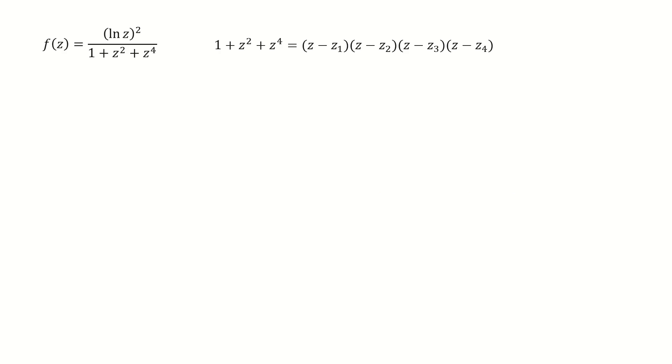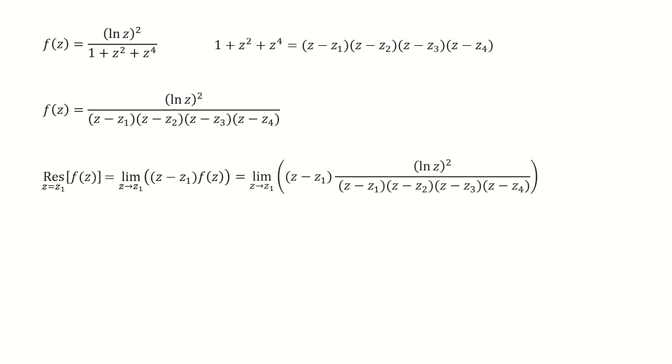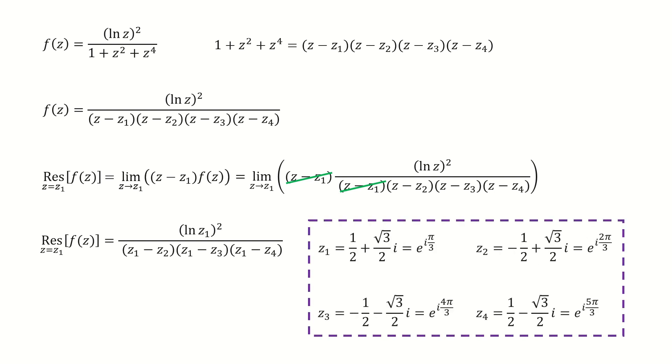I copy the function here. And note for the denominator, it can be factorized into this form. After plug-in, we write this function into this form. And here I only demonstrate the calculation for the residue z1. For other three residues, it can be calculated similarly. So for the residue on z1, because z1 is the simple pole of this function, so we just calculate the limit here. After plug-in the function f, we got here. And then these two terms cancel out. And next, we just replace z by z1 here. And recall the coordinate for these four roots. So we just plug-in and do some algebra to simplify it. Then we got the residue on z1, which is here.